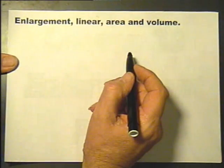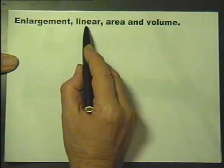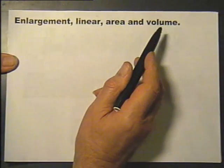So let's put enlargement three different things together: the linear, the area, and the volume.